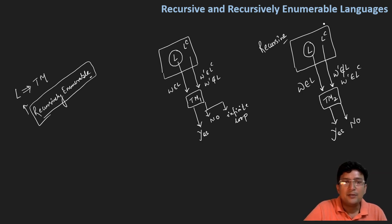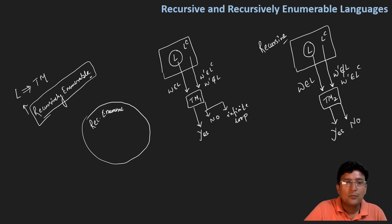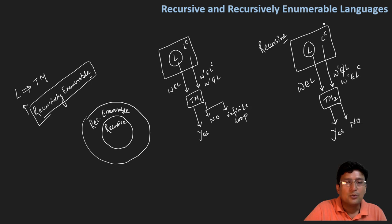तो दो तरह की languages हमने आज देखीं — एक recursively enumerable language और एक recursive language। दोनों के लिए Turing machine बनाई जा सकती है। मान लेते हैं कि this is the recursively enumerable language — तो Turing machine सभी recursively enumerable languages के लिए बन जा सकती है, लेकिन उसी का एक subset होगा जिसके लिए ऐसी Turing machine बनाई जा सकती है जो कि हमेशा halt करेगी, मतलब हमेशा yes और no में answer देगी, कभी भी infinite loop में नहीं जाएगी। तो यह जो recursive languages हैं, let's say इसको हम कहते हैं RC, और recursively enumerable language को कहते हैं RE — recursive languages are actually the subsets of the recursively enumerable language.